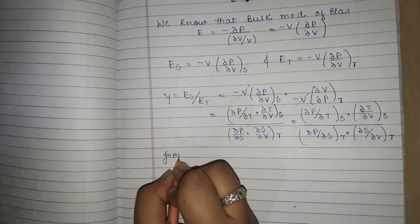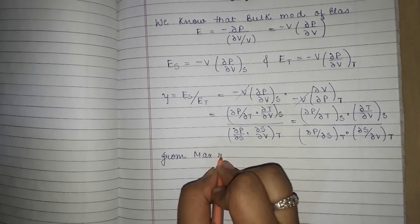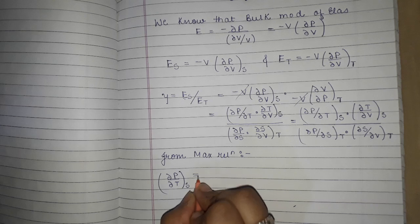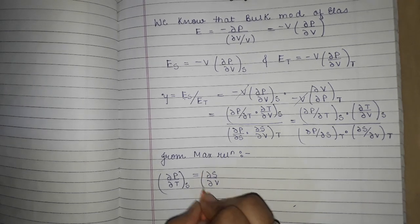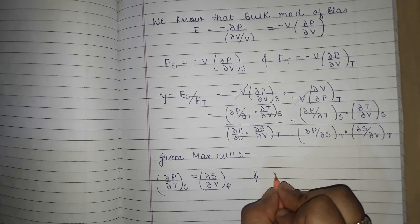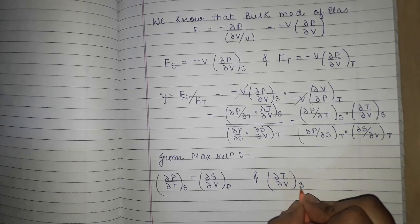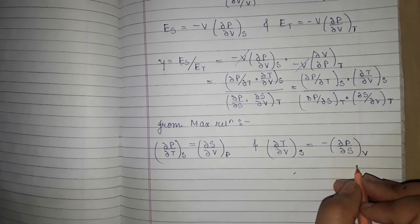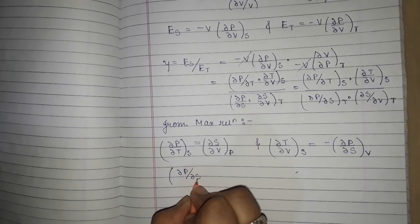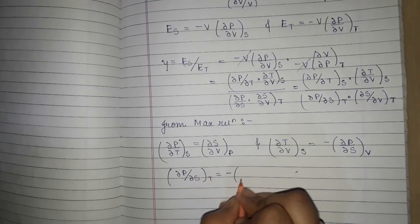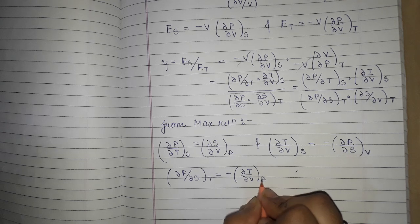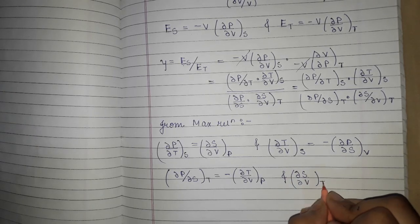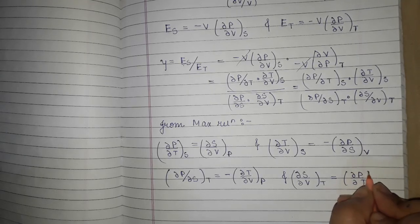From Maxwell's relations: the first gives dP/dT at constant S equals dS/dV at constant P; the second gives dT/dV at constant S equals minus dP/dS at constant V; the third gives dP/dS at constant T equals minus dT/dV at constant P; and the fourth gives dS/dV at constant T equals dP/dT at constant V.